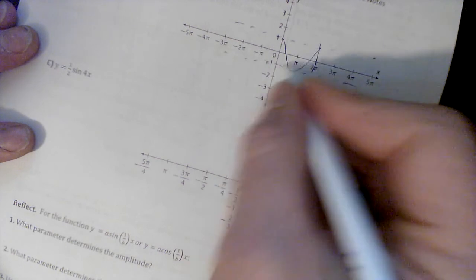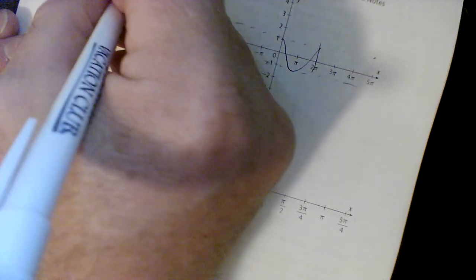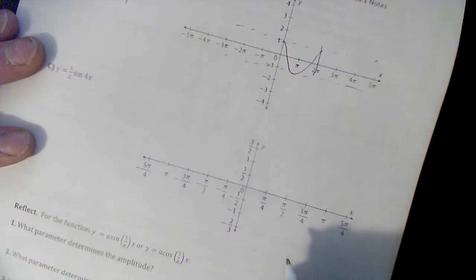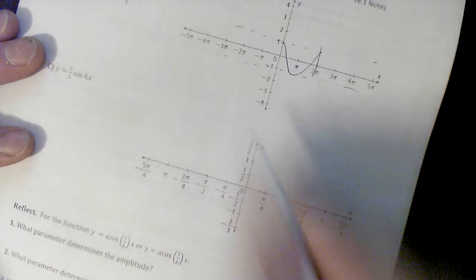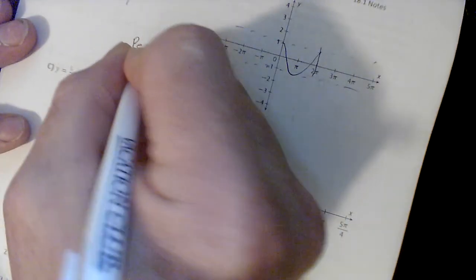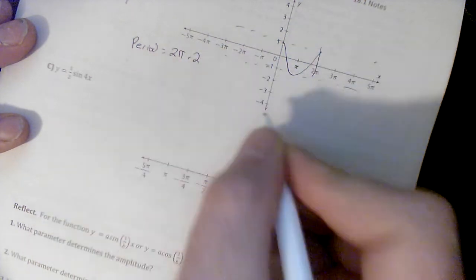Let's see what this cosine graph does. Our a value is negative 3. There's a negative, so this one's going to start instead of at the top, it's going to start at the bottom, because it's still a reflection over the x-axis. Our b value is going to be 2 over 1. It was 1/2, now it's 2 over 1.